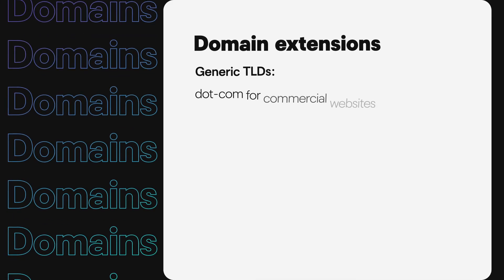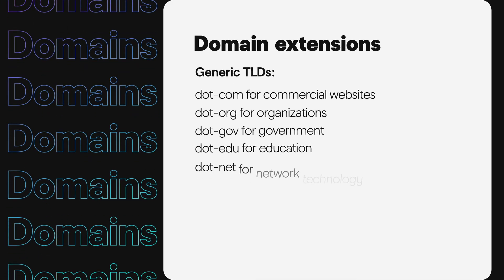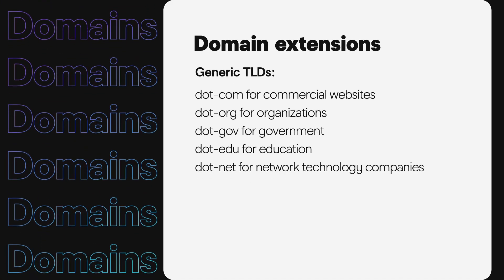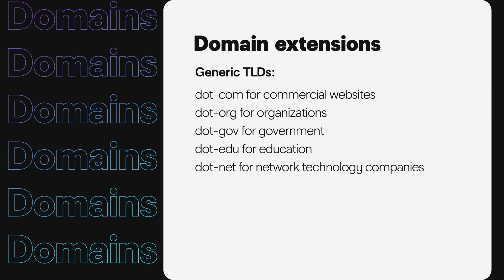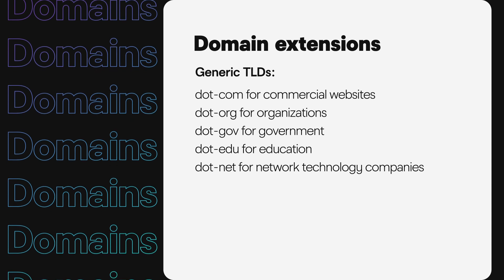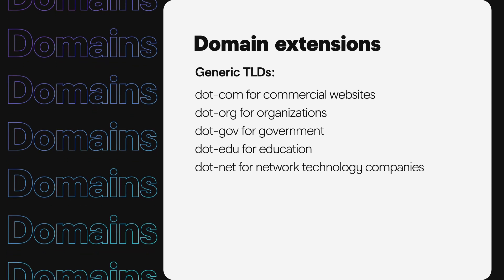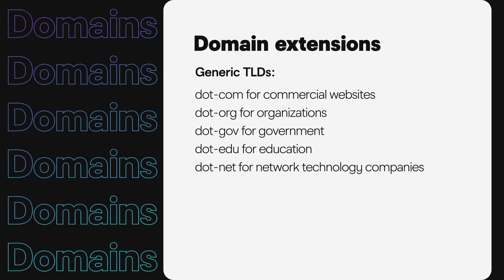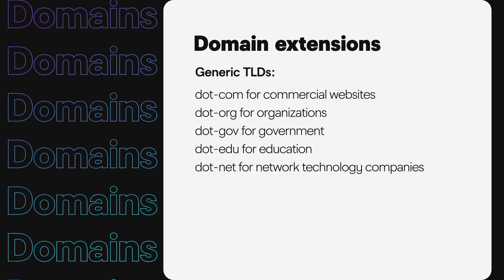In the early days of the internet, the only TLDs were what we now call generic TLDs: .com for commercial websites, .org for organizations, .gov for government, .edu for education, and .net for network technology companies.